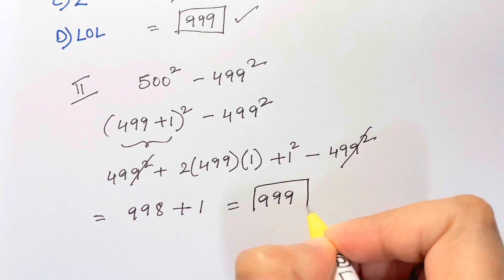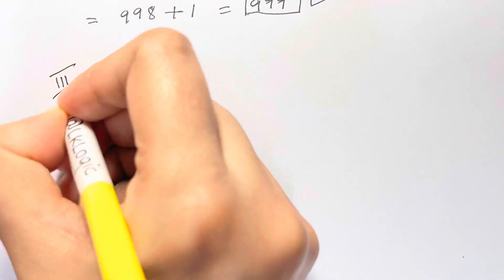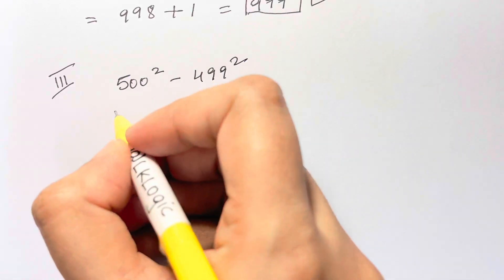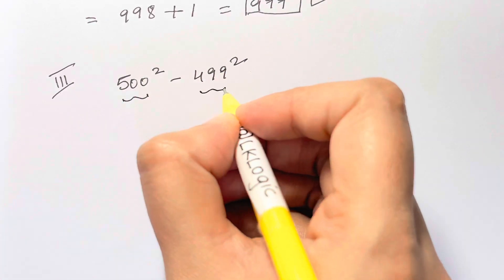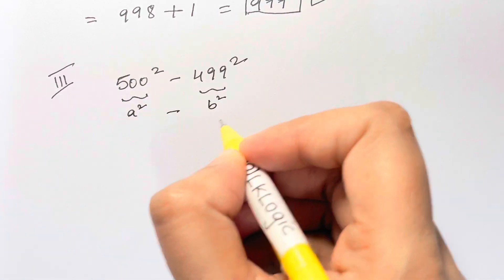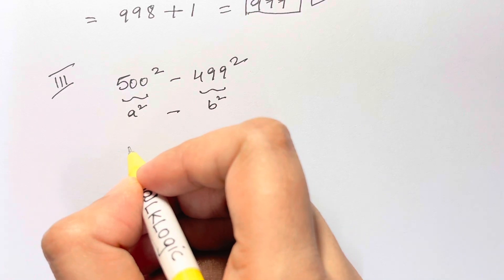We also have a third method using the difference of squares identity. 500 here is a and 499 is b. a² minus b² is (a+b) times (a-b), so that's 500 plus 499 and 500 minus 499.